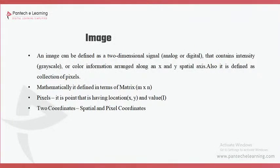Images are simply called a 2-dimensional signal. A 2D signal contains rows and columns. If you have rows and columns, it simply comes under matrix format. Every digital image is in matrix format — rows and columns — simply called an M cross N format. Each and every image is in matrix format, and the collection of pixels is called an image.